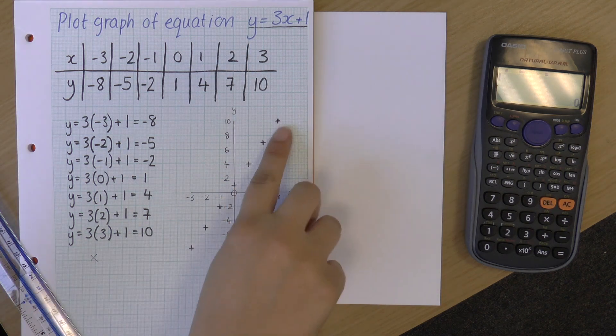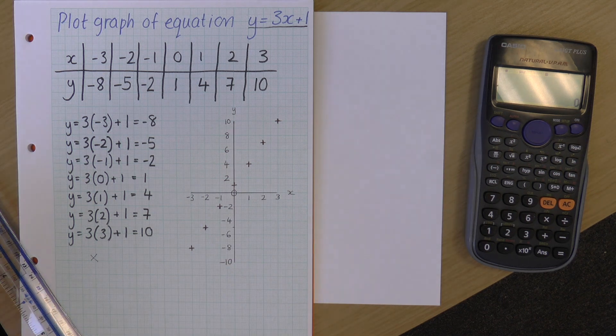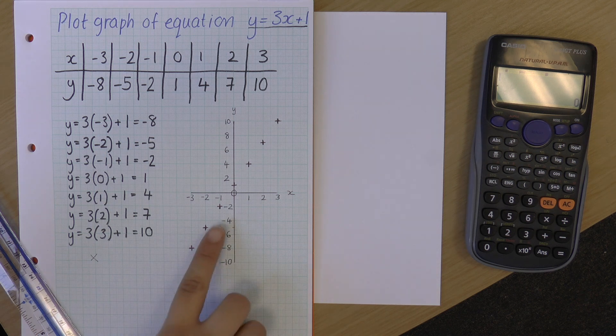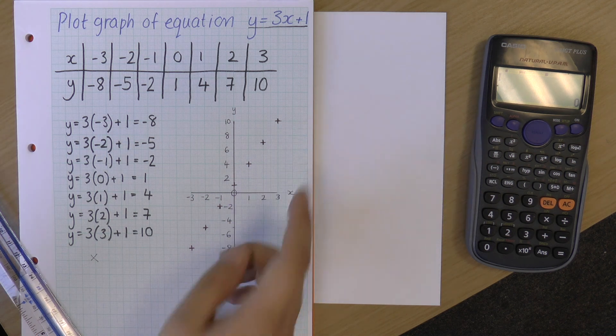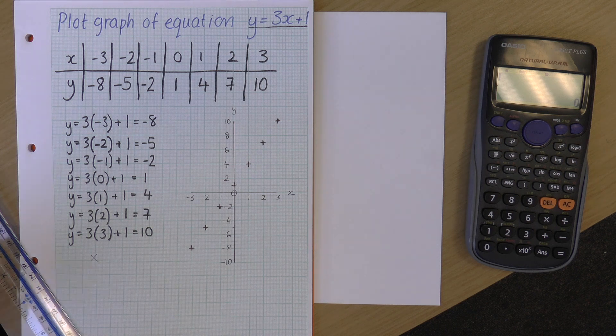So you can see I now have my points, and these make a really nice line. So this is a straight line graph. So your points should make a straight line. If any of the points you've plotted are not in a straight line with the others, then you'll have calculated the values wrong.